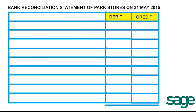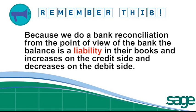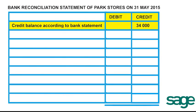The bank statement received on 31 May 2015 in respect of Park Stores shows a favourable balance of R34,000. Because we do a bank reconciliation from the point of view of the bank, the balance is a liability in their books. Therefore it increases on the credit side and decreases on the debit side. A favourable bank balance means the bank balance would be on the credit side.